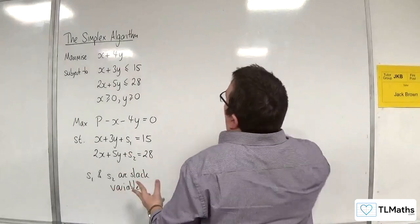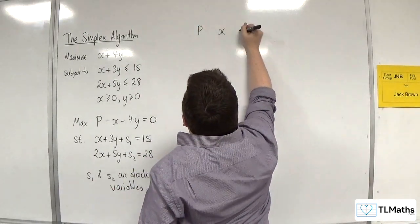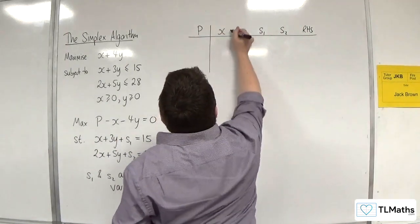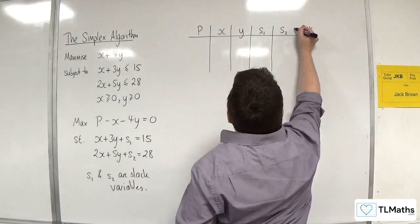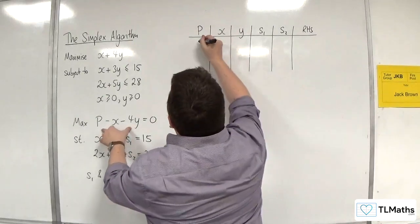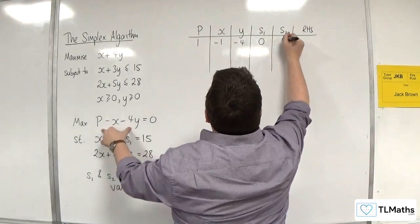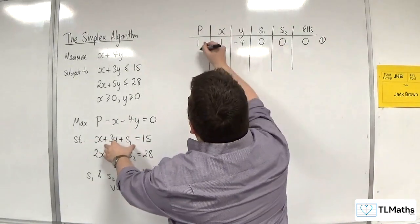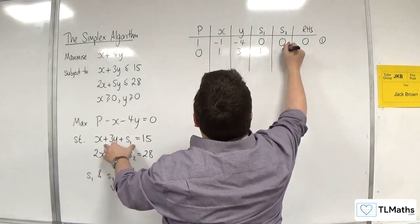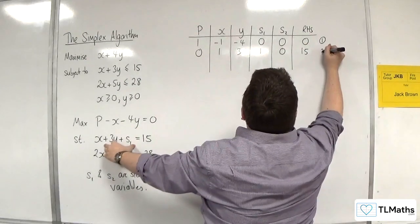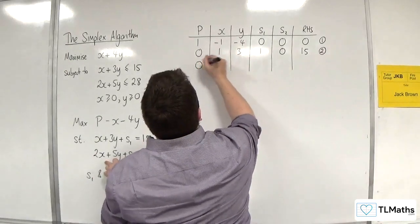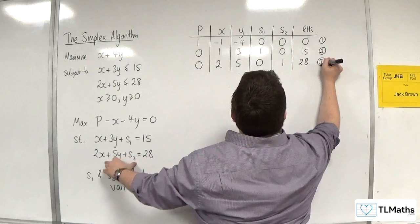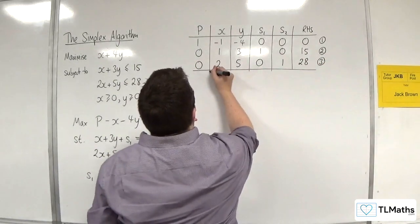Now I'm ready to go into the simplex tableau. The columns are: p, x, y, s1, s2, and the right-hand side. The first row (equation 1): p is 1, x is minus 1, y is minus 4, s1 is 0, s2 is 0, right-hand side is 0. Equation 2: 0p, 1x, 3y, 1s1, 0s2, right-hand side 15. Equation 3: 0p, 2x, 5y, 0s1, 1s2, right-hand side 28. That is my initial tableau.